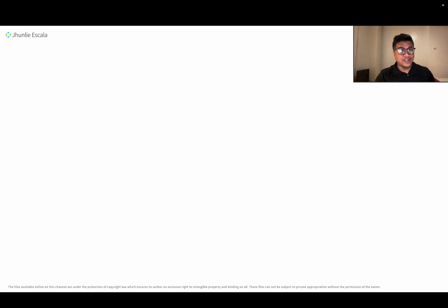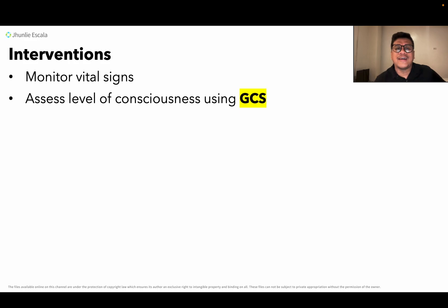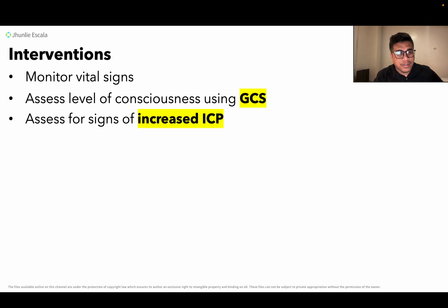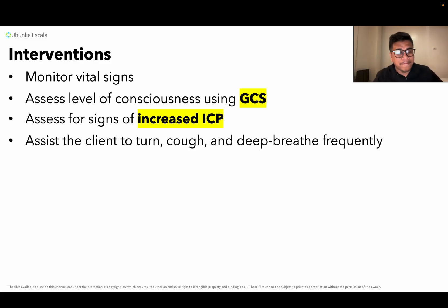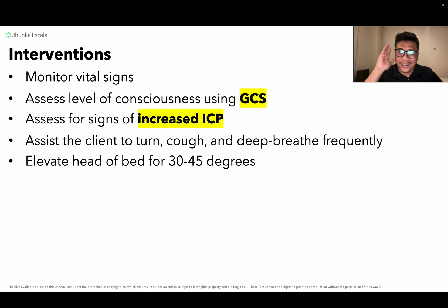Now for interventions: number one, monitor vital signs — this is essential. When monitoring vital signs, also assess the level of consciousness using the Glasgow Coma Scale (GCS). Monitor the mental status and neuromuscular status of the patient. Assess for signs of increased intracranial pressure, and elevate the head of the bed to 30 to 45 degrees to prevent increased ICP.